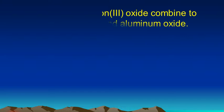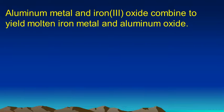Now, let's talk about some of the ways that we describe reactions. This is a sentence. Aluminum metal and iron(III) oxide combine to yield molten iron metal and aluminum oxide. And that's a sentence that describes a chemical reaction. That's called the thermite reaction, by the way. And it's a very exothermic reaction. It gives off sparks. It gives off a lot of heat. It is definitely a chemical reaction.